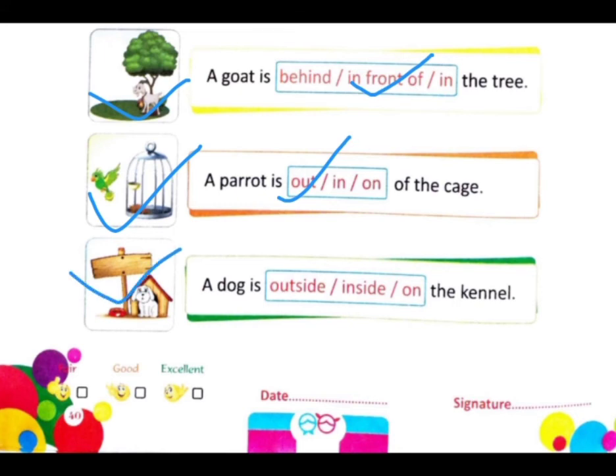Next and last — a dog is outside / inside / on the kennel. जो dog है वो अपने kennel से outside है। इसलिए हम outside पे टिक करेंगे।